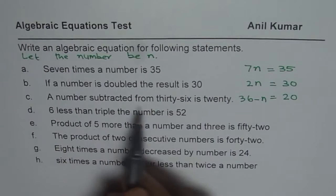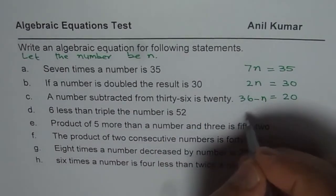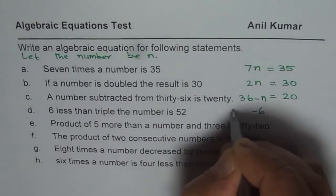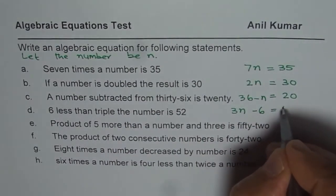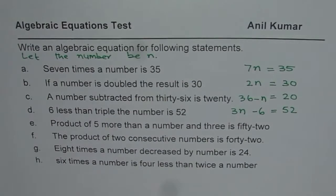6 less than triple the number is 52. So you have to take away 6 from 3 times the number, triple the number, then you should get 52 as your answer. That is what it means.